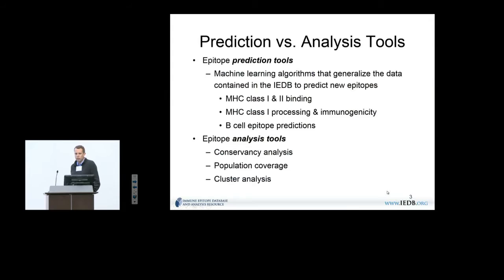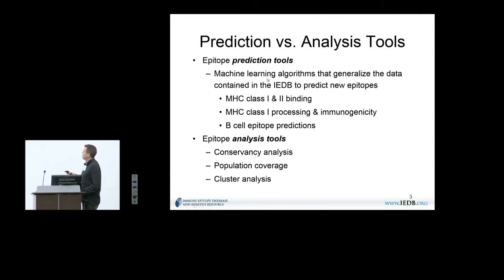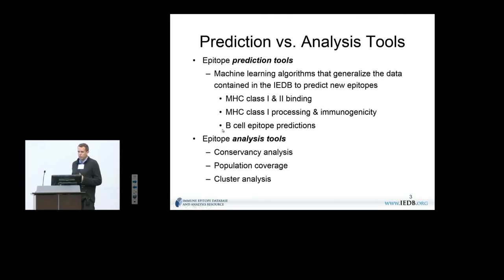There are two main classes of tools in the IEDB. One is the prediction tools, and the other is the analysis tools. Prediction tools are algorithms trained on IEDB data used to learn rules of immune recognition, which can be used to scan unstudied entities and predict new epitopes — for example, MHC class I and class II binding tools, MHC class I processing and immunogenicity predictions, and B-cell epitope predictions. In contrast, analysis tools are those where you have a set of epitopes and want to learn additional features of them, such as conservancy analysis, population coverage analysis, and cluster analysis.